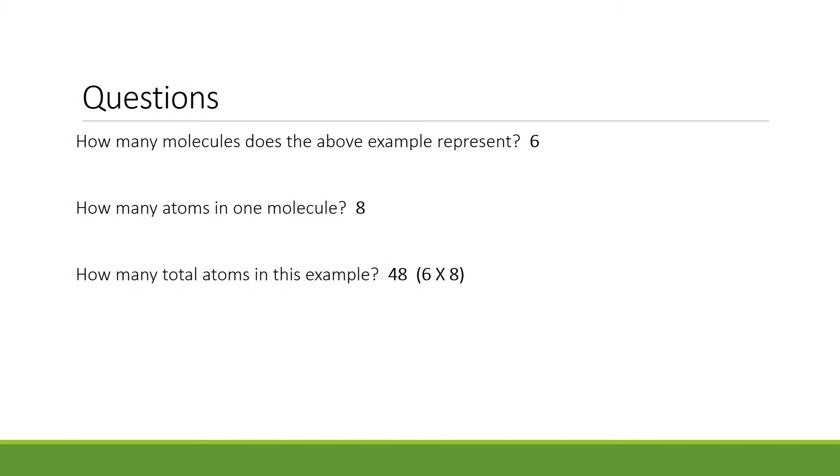How many atoms are in one molecule? Well, there's one sodium, two hydrogens, one sulfur, and four oxygens. If you add those up, that totals eight atoms in one molecule. Then how many total atoms are there? You simply take the number of molecules, which is six, times the number of atoms in one molecule, which is eight, and multiply. So, six times eight gives you a total of 48 atoms.